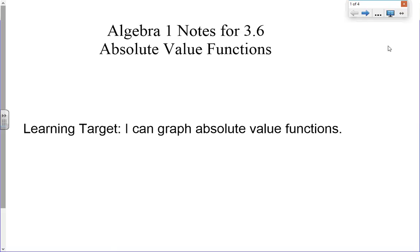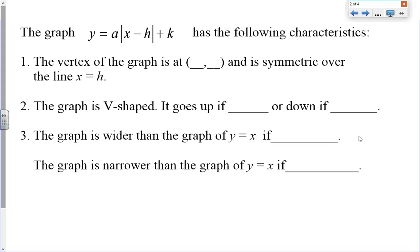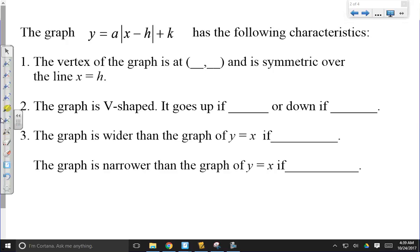So let's take a look at what these look like. You guys have also solved absolute value equations and inequalities, so you kind of already know what the equations look like. But we're going to take a look at what the general form is. So it says the graph of y equals a times the absolute value of x minus h plus k has the following characteristics. Now before we start describing those, I want to talk to you guys real quickly.